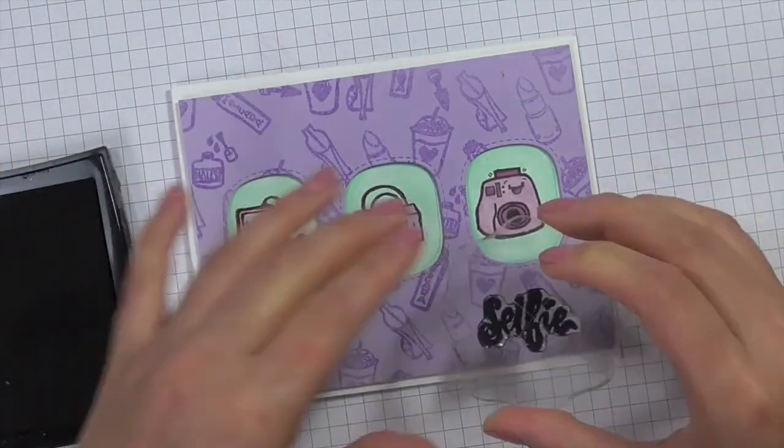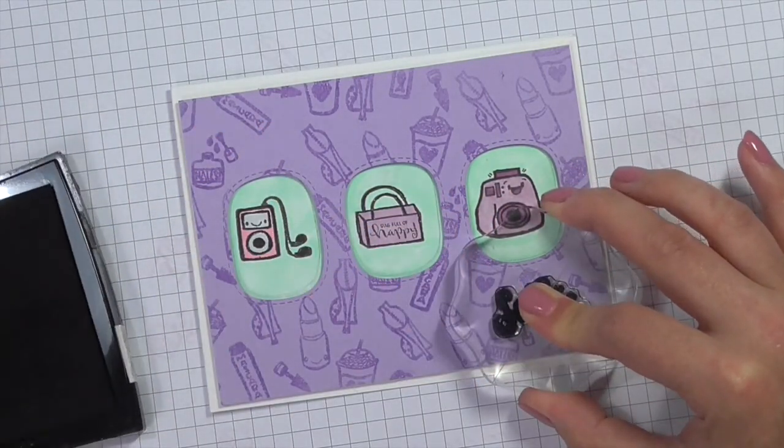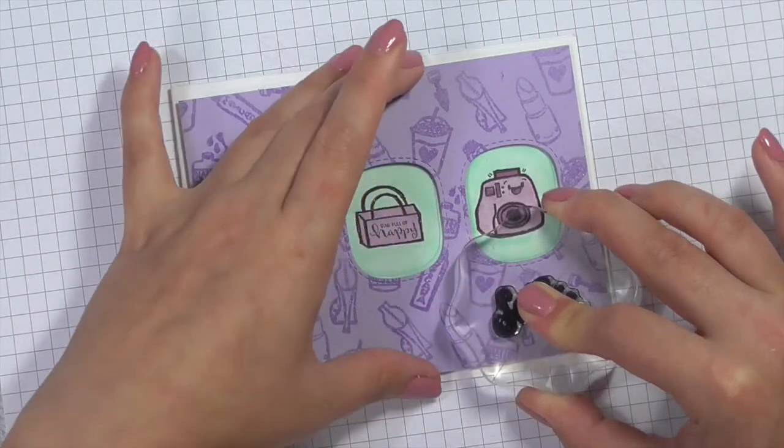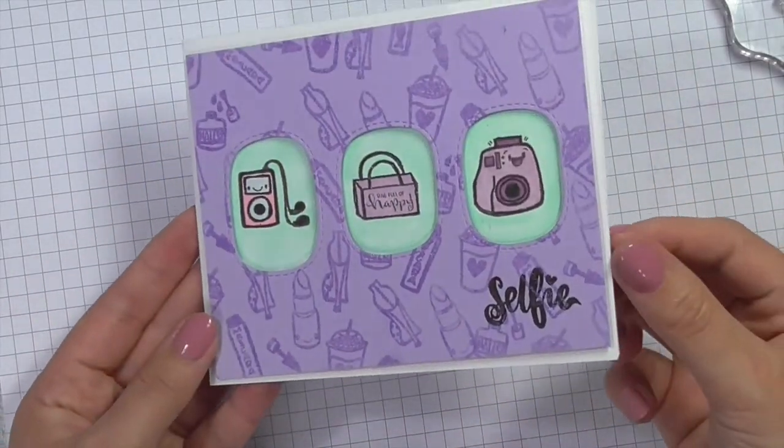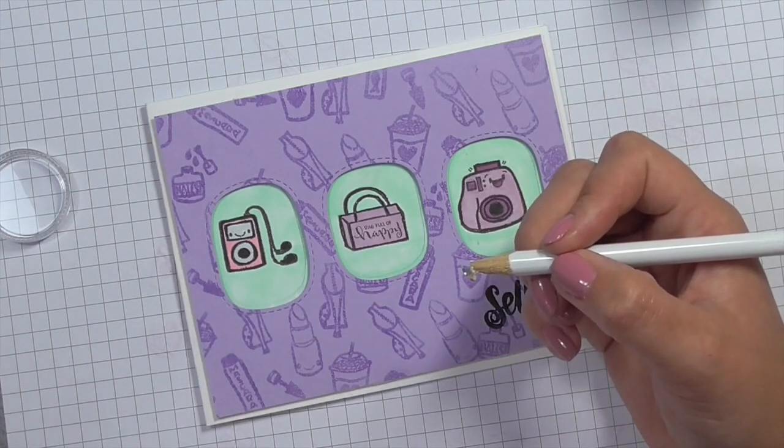Okay so I decided to take the selfie sentiment from this stamp set and I love this. I think it works really well with the camera, so I decided to stamp that down and I pressed really firmly to make sure that the stamping applied really well over that embossing powder.